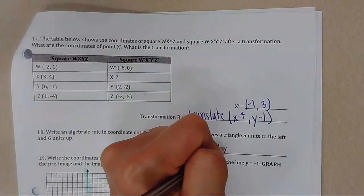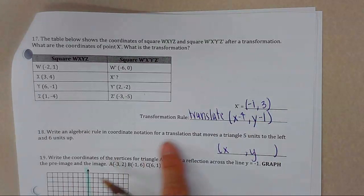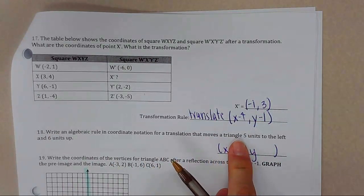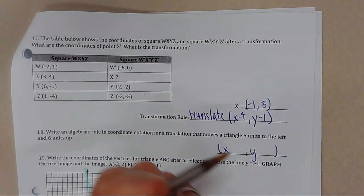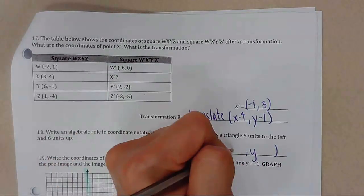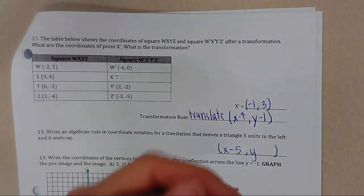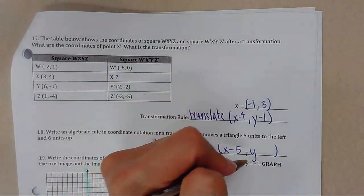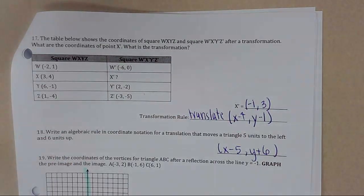Write an algebraic rule in coordinate notation for a translation. For moving 5 units to the left and 6 units up, the rule would be (x − 5, y + 6).